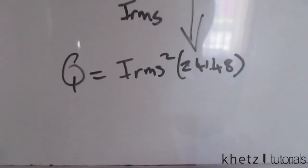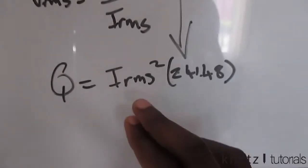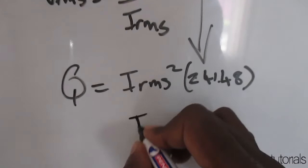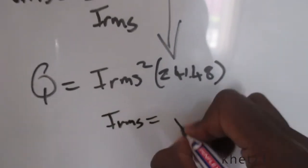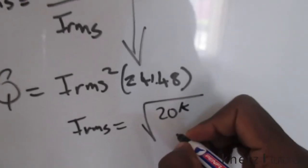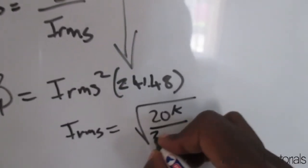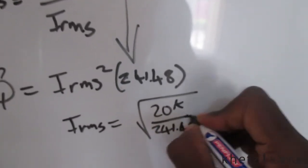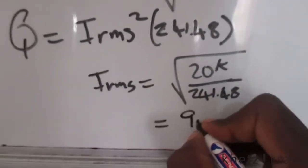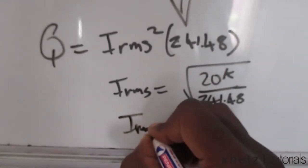You're just going to say Irms equals the square root of Q, which is 20k, divided by 241.48. The square root of this should give you a value of around 9.1, so your Irms is 9.1.